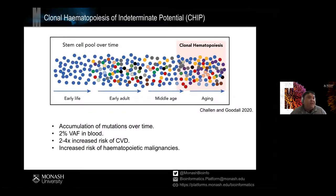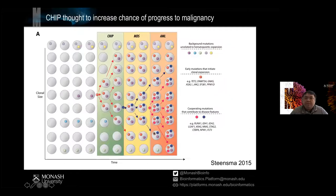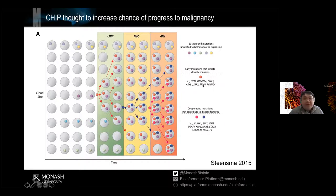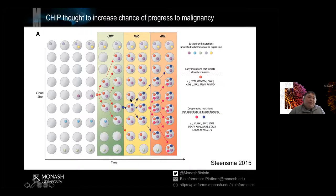CHIP also has implications in the context of cancer treatment and bone marrow transplants. In your stem cell compartment, you can accumulate mutations that are more often than not benign. However, if you have mutations that affect certain genes otherwise known to be associated with acute myeloid leukemia, and these mutations actually change the protein itself, that's when you've got the condition called CHIP. If that continues on, you will then develop MDS, which could eventuate into full-blown leukemia.